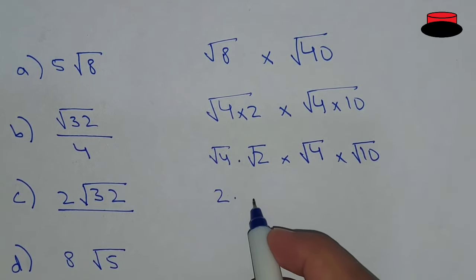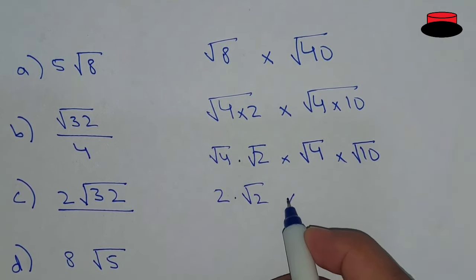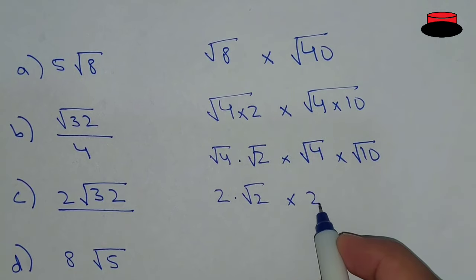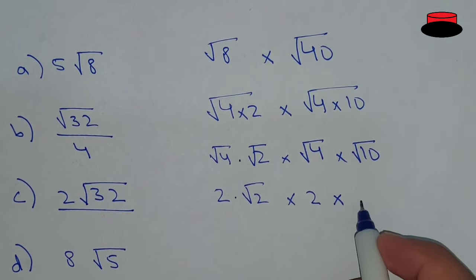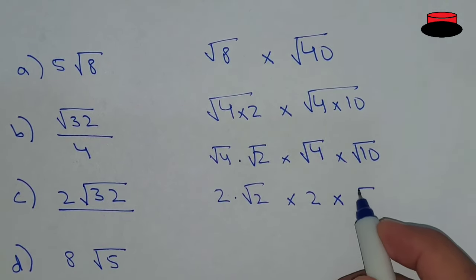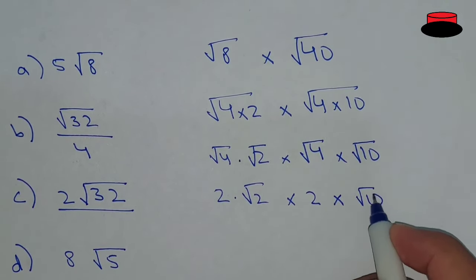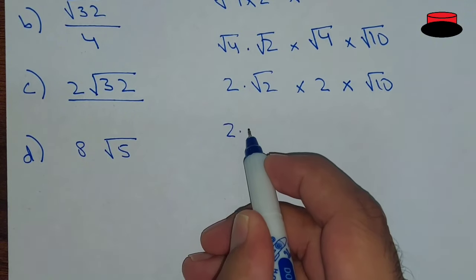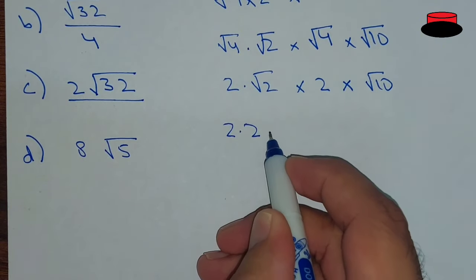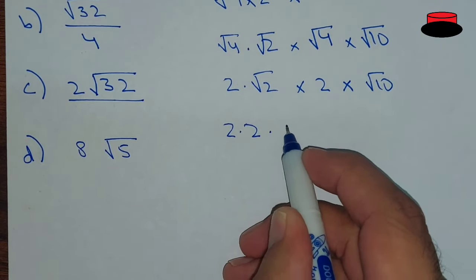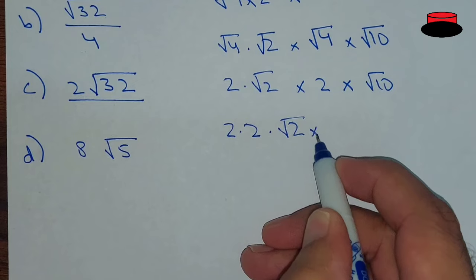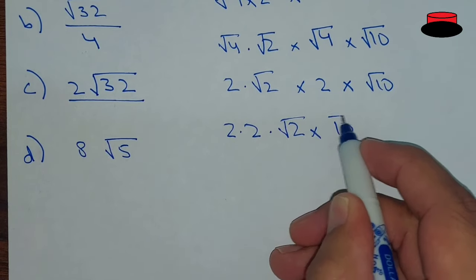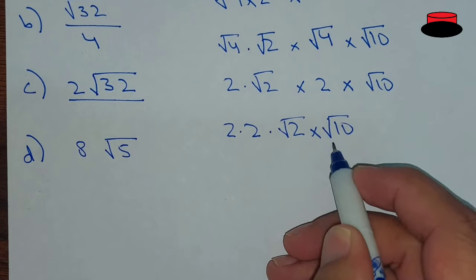We know that under root 4 is 2, so we have 2 multiply by under root 2, and in the same way under root 4 is 2 multiply by under root 10. Now, rearranging these: 2 multiply by 2 multiply by under root 2 multiply by under root 10.